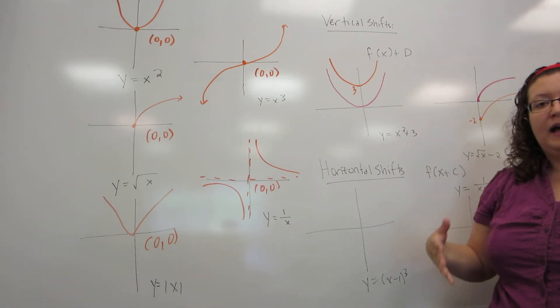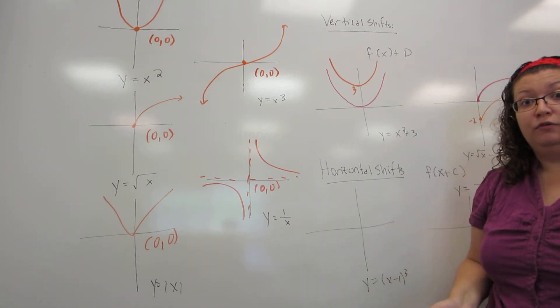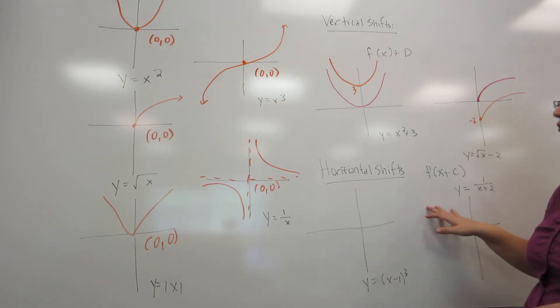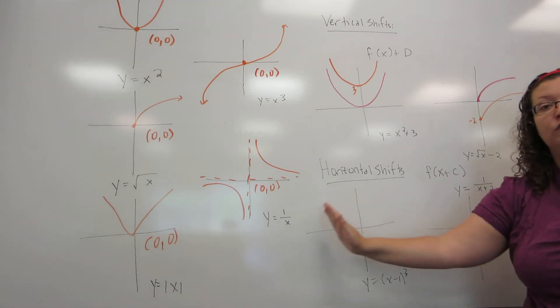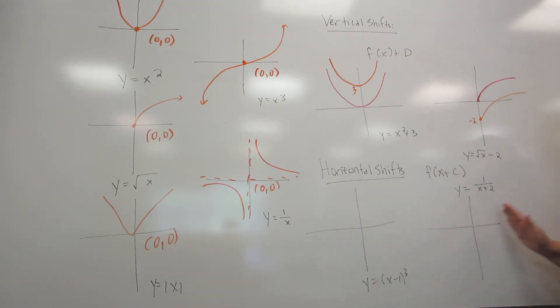When we did vertical shifts, adding moved it up, subtracting moved it down, which is what you'd expect. When you do horizontal shifts, it's always backwards of what you'd expect. So adding will actually move it left, and subtracting will move it right.